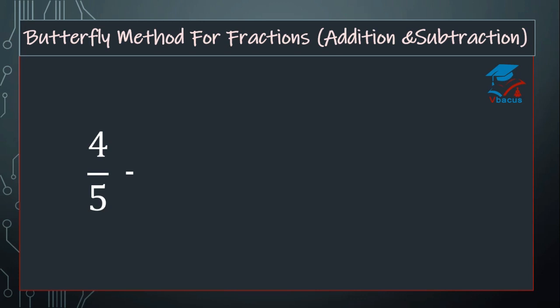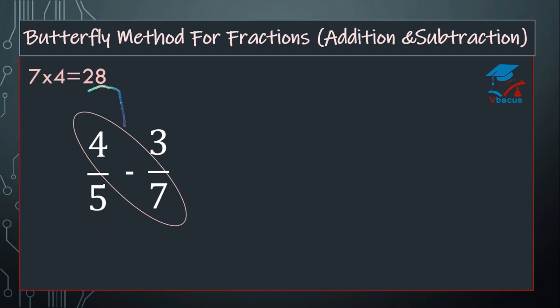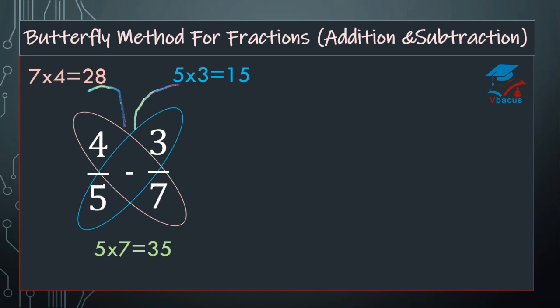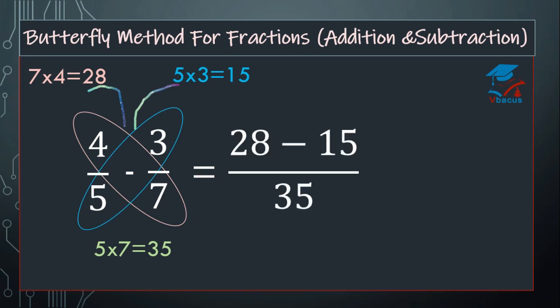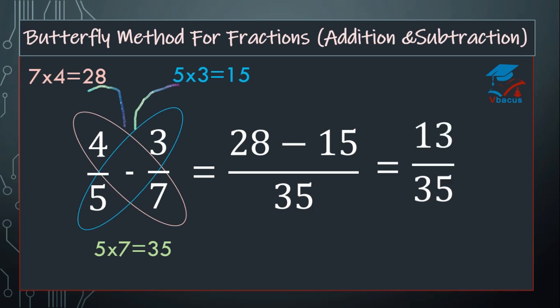Subtract 4 over 5 minus 3 over 7. Multiply 4 and 7, that will become 28. Multiply 5 and 3, that will become 15. Multiply the denominators, that will become 35. Subtract 15 from 28 over 35: 28 minus 15 is 13. So 13 over 35 — since 13 and 35 are not divisible by a single number, it is already in lowest term. This is our final answer.